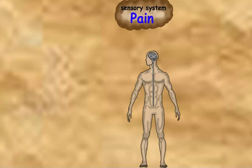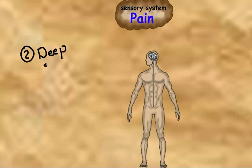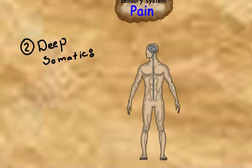The second type is deep or somatic pain — the pain of muscles, joints, ligaments, and bone periosteum. It is a dull, not well-localized, diffuse, intense, and prolonged type of pain.